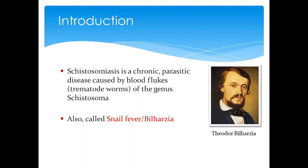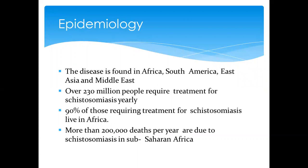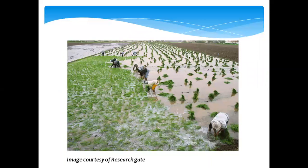Schistosomiasis is also known as snail fever. Looking at the epidemiological distribution, it mostly occurs in Africa, South America, and some parts of Asia. Close to 230 million people are actually receiving treatment, and 90% of these are in Africa, most specifically sub-Saharan Africa.